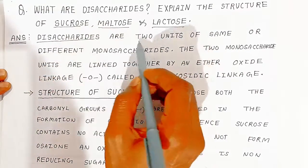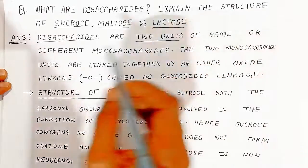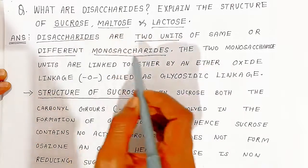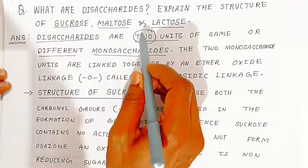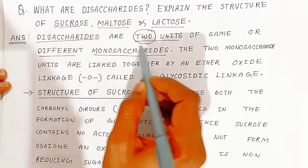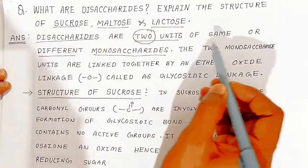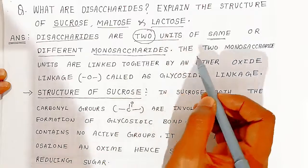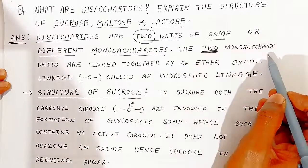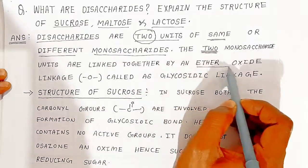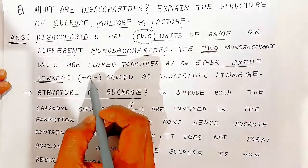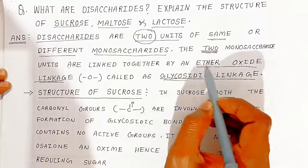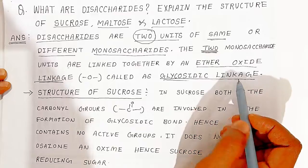Disaccharides are two units of same or different monosaccharides. The word 'disaccharide' reflects this — two units. The two monosaccharide units are linked together by an ether oxide linkage, which is also called a glycosidic linkage.